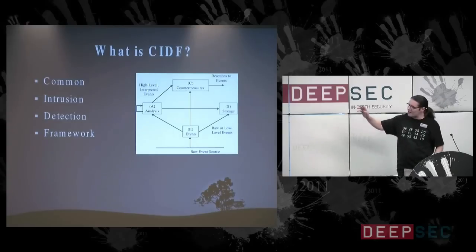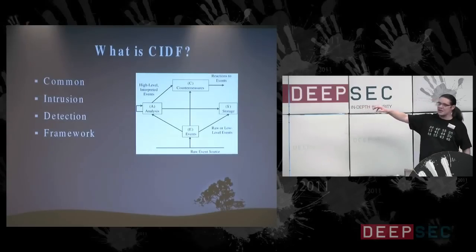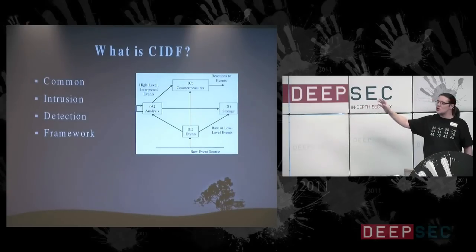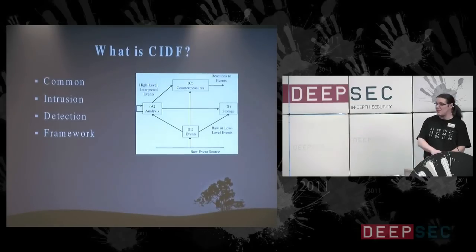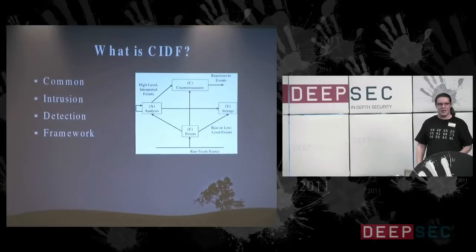The other box they have here is a D box — a storage box. Data's useless if you can't access it, and that's the whole point of a D box. So we have an E box, an A box, a C box, and a D box.